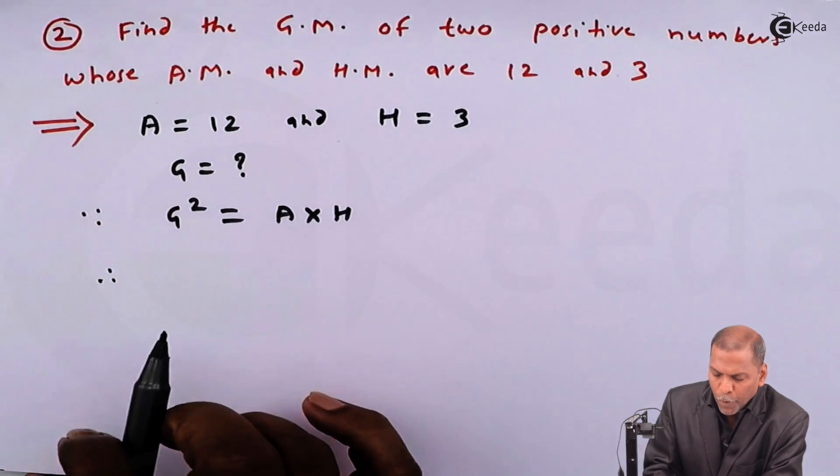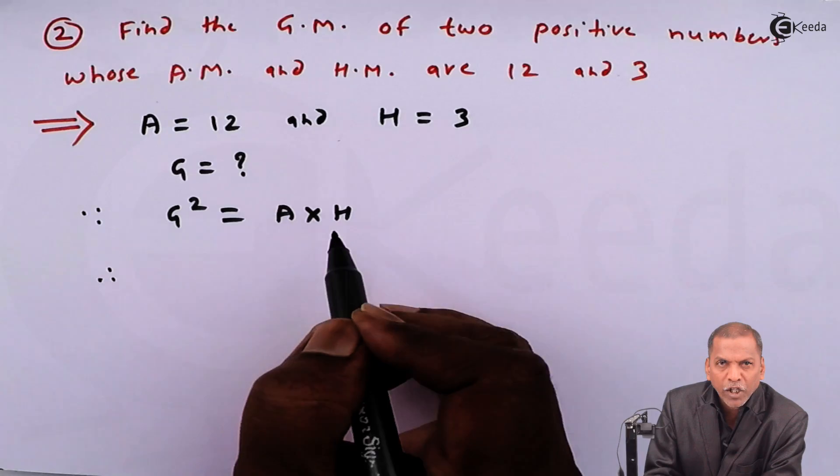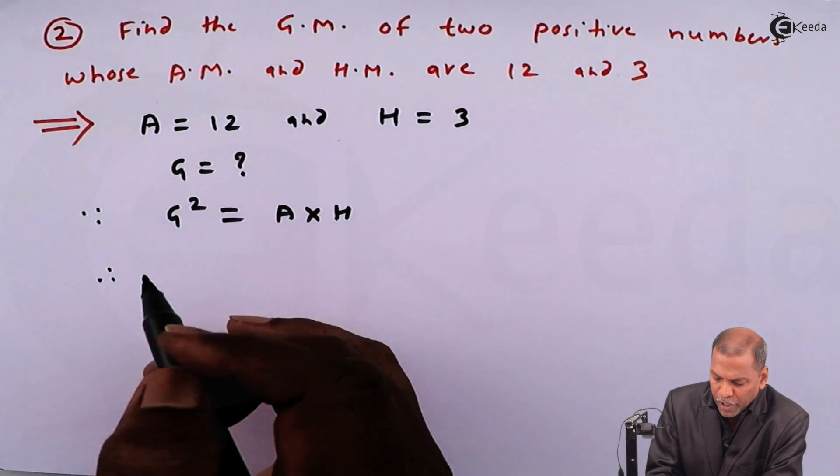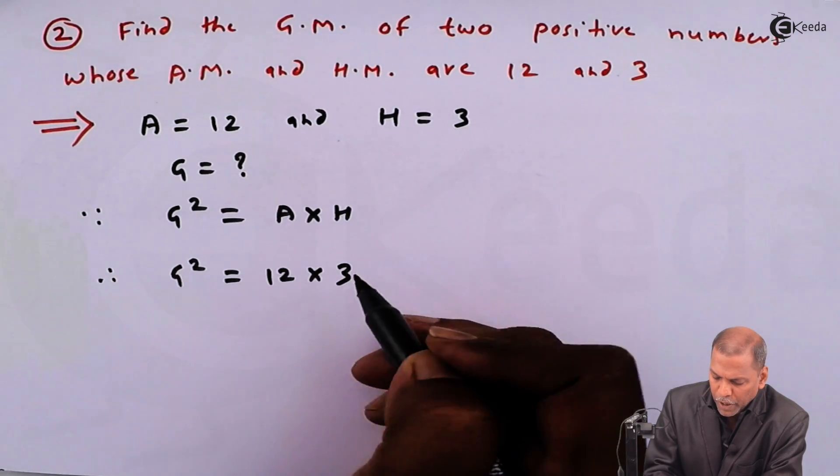Substituting the corresponding value of A equal to 12 and H equal to 3, we get G squared is equal to 12 into 3.